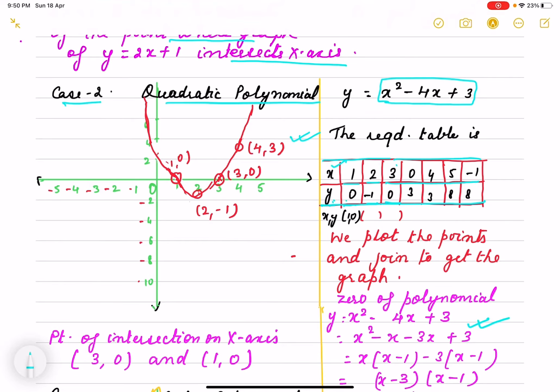So we get points 1, 0, then 2, minus 1, then 3, 0, then 0, 3, then 4, 3, then 5, 8, and minus 1, 8. All these points we plot here on the graph.